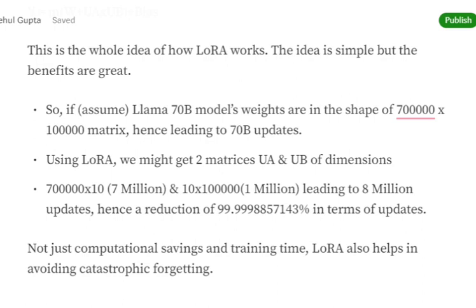Here you can see N is 700,000 and M is 1,000,000. We're talking about N×K and K×M, so K equals 10. Eventually here we have 7 million updates, here we have 1 million updates—a total of 8 million updates instead of 70 billion.